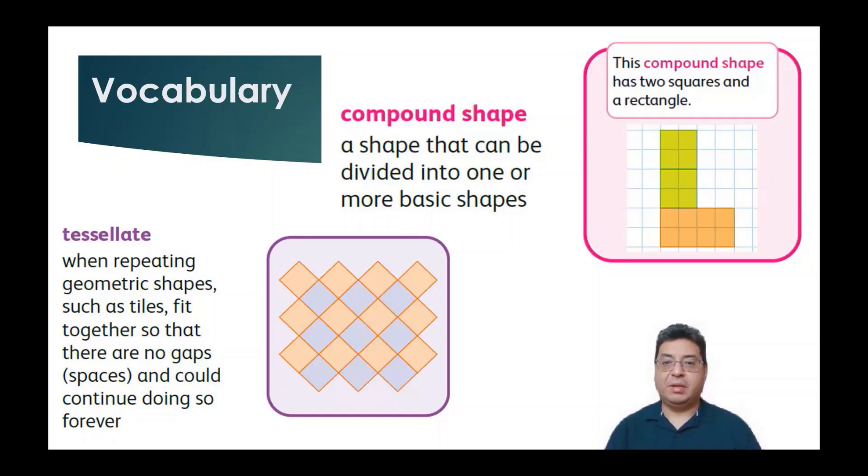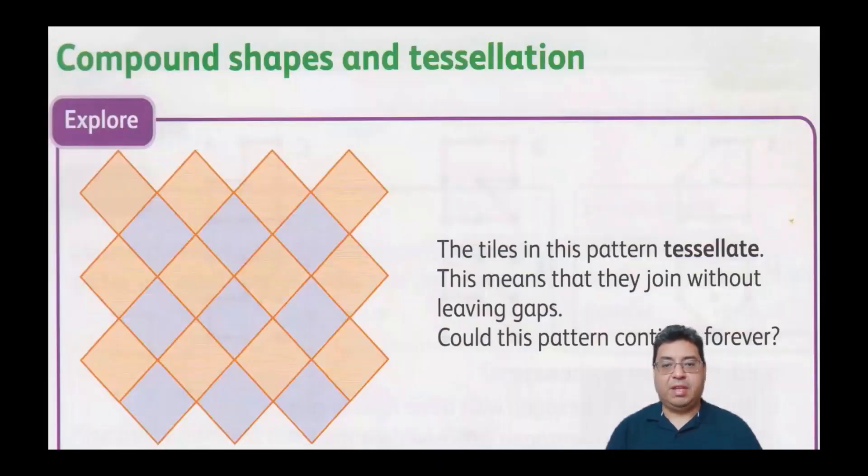Let's go ahead and look at some more meanings on tessellation now. For here, I've got this example to explore here, and it says, the tiles in this pattern tessellate. This means that they join without leaving gaps. So, my question to you is, could this pattern continue forever? And I just talked about that previously, and of course, the answer is yes. This can just go on and on forever.